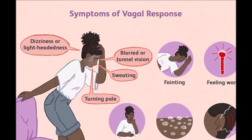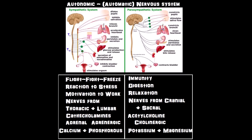First off, let's learn about the autonomic nervous system. There is the fight-and-flight system, known as the sympathetic system. And then there's the parasympathetic system, which is involved in our immunity, digestion, and relaxation. We have this constant battle and constant balance happening between the sympathetic nerves and the parasympathetic nerves.